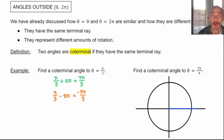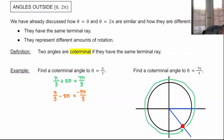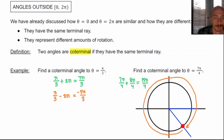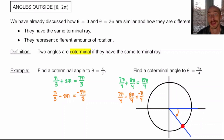If I was searching for coterminal angles to 7π/4, first I would find 7π/4. Seven-fourths is pretty close to 8/4, which is 2π, so I'm short of 2π by π/4, which is 45 degrees. If I went 2π farther, I'd say this is 7π/4 + 2π, which is 8π/4, for a total of 15π/4. Then rotating in the clockwise direction — subtracting 2π — would be 7π/4 minus 8π/4, which equals negative π/4. It makes a lot of sense that that's π/4 in the negative direction.